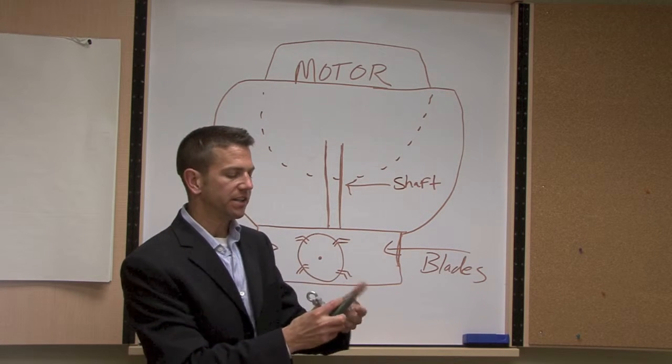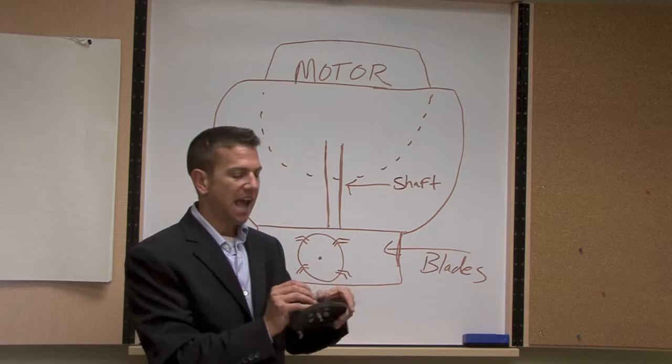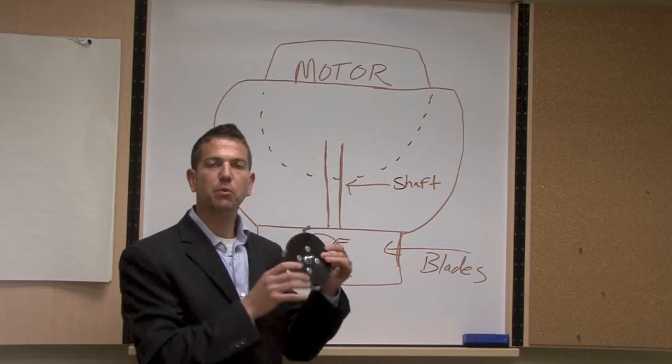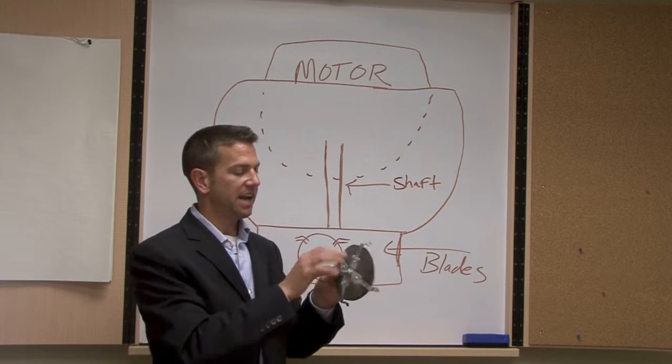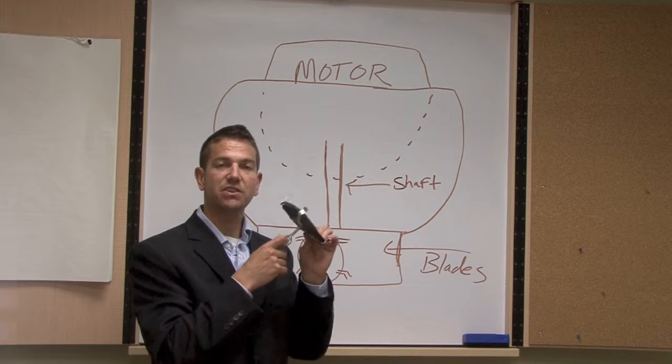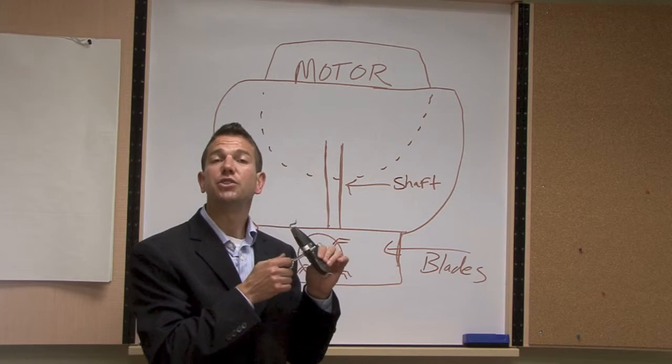As you can see right here, this is a very simple access panel or port. What it consists of is a rubber molding and then it has four clips on it and it has a center piece that you can actually stick your finger in so that you can pull it out.